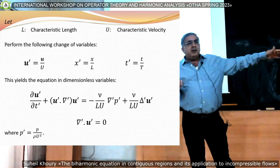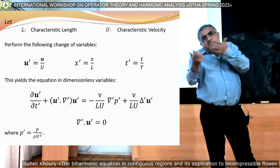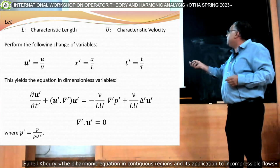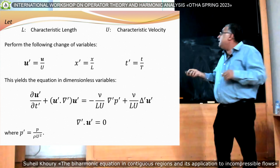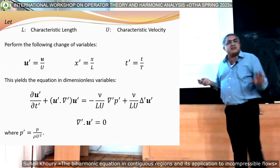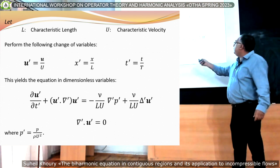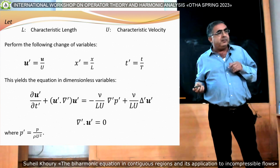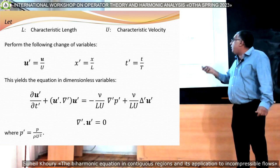For example, if you have flow around a sphere, you can say the characteristic velocity is the velocity at infinity. For the length, you can say the diameter or radius of the sphere. Anyway, these are the Navier-Stokes equations. I'm going to add more restriction: I'm going to assume steady flow. For steady flow, the time derivative disappears. This term here is the reciprocal of the so-called Reynolds number — the famous Reynolds number.